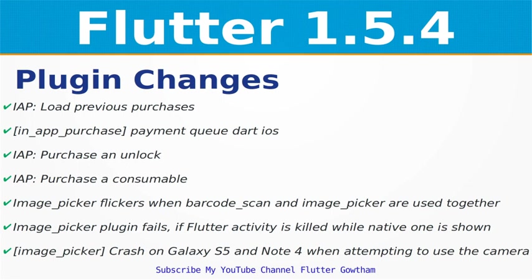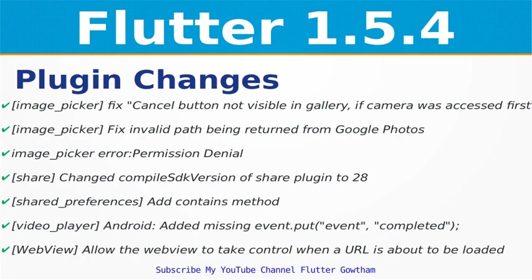Image Picker: fix flicker when barcode scan and image picker are used together. Image Picker: plugin fails if Flutter activity is killed while native one is shown. Image Picker: crash on Galaxy S5 and Note 4 when attempting to use the camera. Image Picker: fix cancel button not visible in gallery if camera was accessed first. Image Picker: fix invalid path being returned from Google Photos. Image Picker: error permission denial.